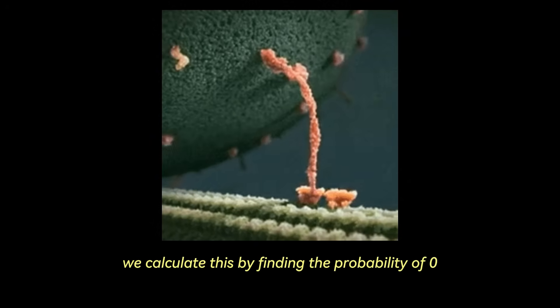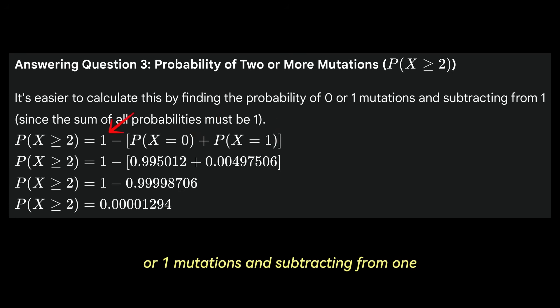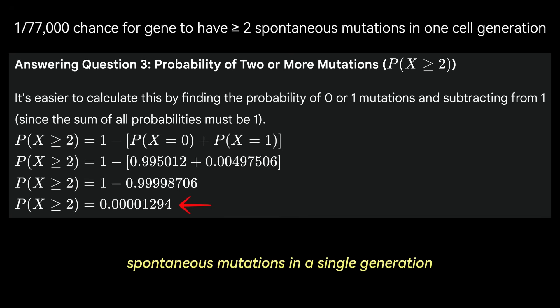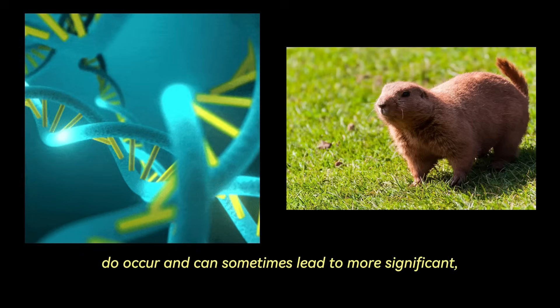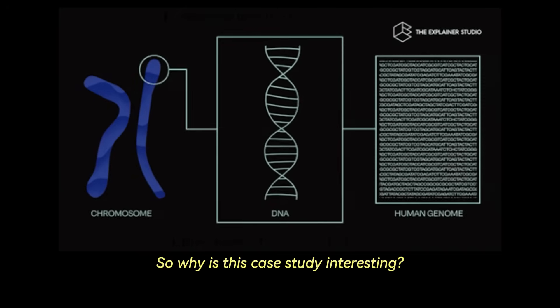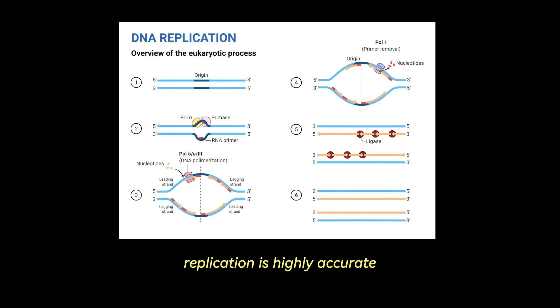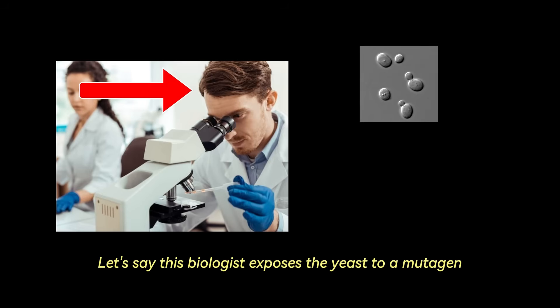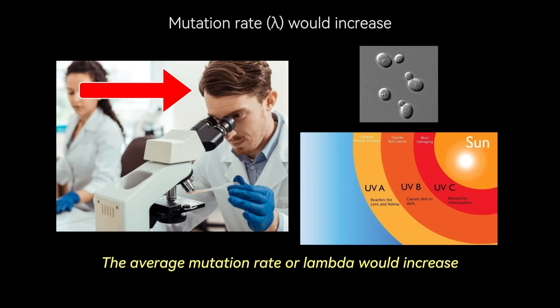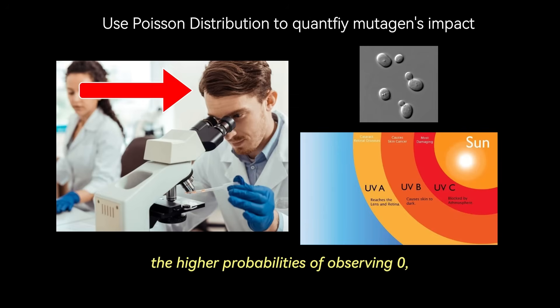And for the probability of two or more mutations, we calculate this by finding the probability of zero or one mutations and subtracting from one. So there is an approximately 0.0013% chance, or about 1 in 77,000 that the gene will acquire two or more new spontaneous mutations in a single generation. While extremely rare for a specific gene in one generation, if you consider the vast number of genes in an organism and many generations in a population, such events, though individually improbable, do occur and can sometimes lead to more significant functional changes or even be deleterious. So why is this case study interesting? It reflects the reality that DNA replication is highly accurate but imperfect. Even very low probabilities of mutation when scaled up across populations and geological time provide the genetic variation upon which natural selection acts. Let's say this biologist exposes the yeast to a mutagen, like UV radiation or certain chemicals, the average mutation rate or lambda would increase. They could then use the Poisson distribution to predict the higher probabilities of observing zero, one, or more mutations, which quantifies the mutagen's impact.